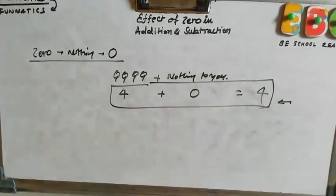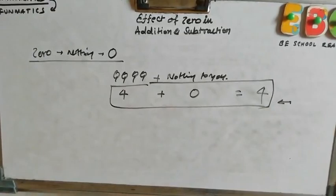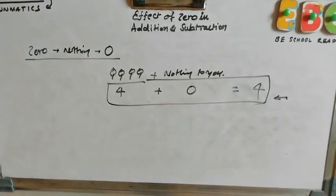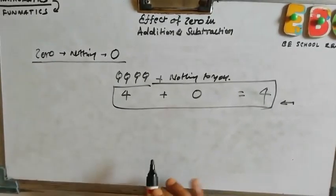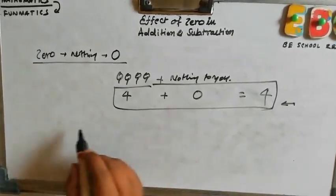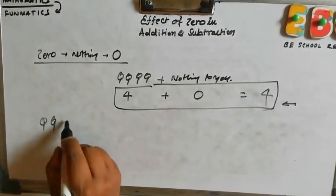Now, we will see the zero's effect in subtraction. Now, you have how many lollipops? You have four.